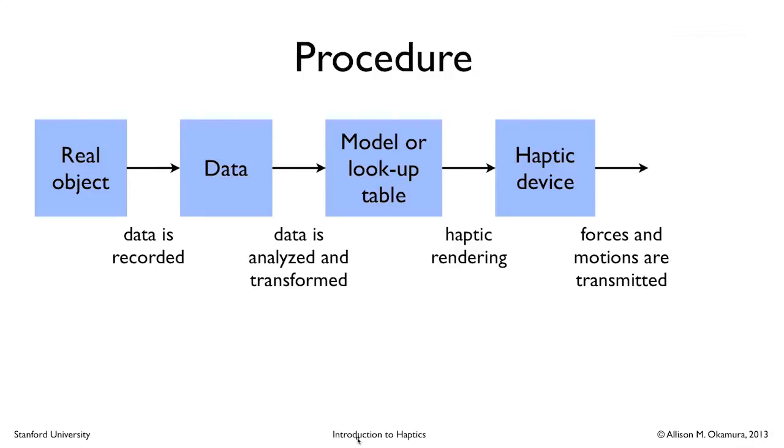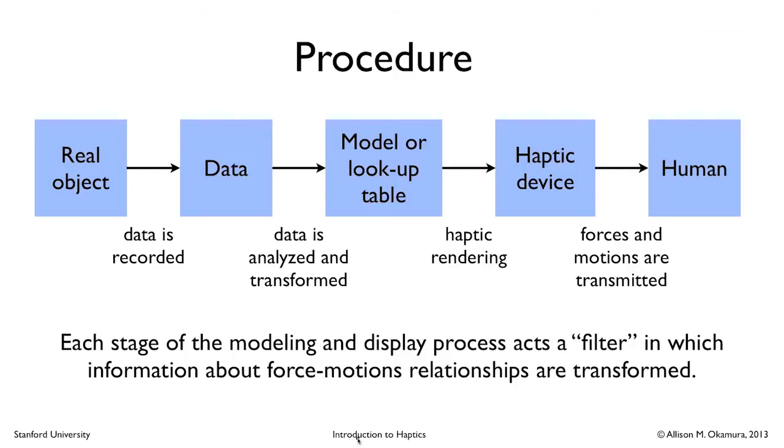Now, when a person interacts with a haptic device, the forces and motions that are based on that model will be transmitted to a human user. Each stage of the modeling display process, going all the way from the start of a real object to something that the person feels, you can think of as acting as a filter where information about force motion relationships are transformed. Ideally, you would like the human to feel as if they are directly touching the real object. But instead, the human is traveling through this complicated pathway. What they feel through the haptic device may not really feel that much like the real object. Our goal is to try to make the person feel something that's as realistic as possible by going through these steps and trying to avoid losing information as we pass through these filters.